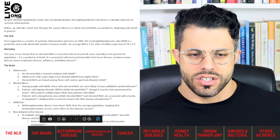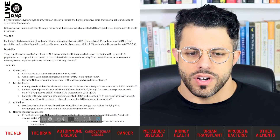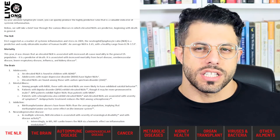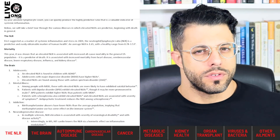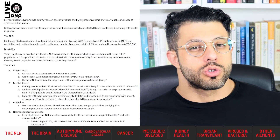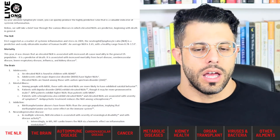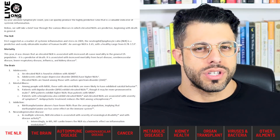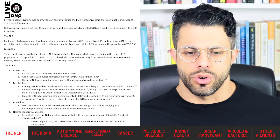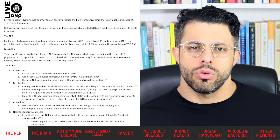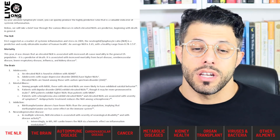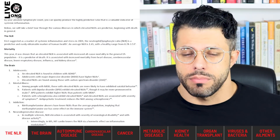The NLR was first suggested as a marker of systemic inflammation and stress in 2001. An average NLR across people is 1.65, which is quite low. People with tendencies toward inflammation tend to be around 2 or 2.5, and people in acute states of inflammation can be around 3.5 or much higher. If your ratio is above 2, you may want to do further tests to find out why.